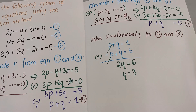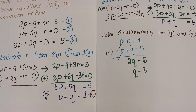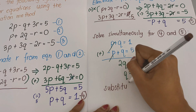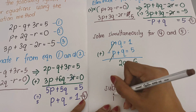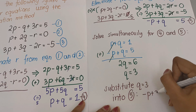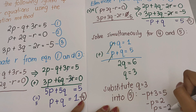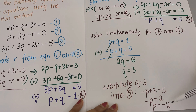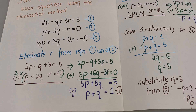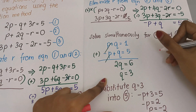Now that we have q equals 3, substitute into equation 5: negative p plus 3 equals 5, so negative p equals 2, giving p equals negative 2. We now have both p and q.